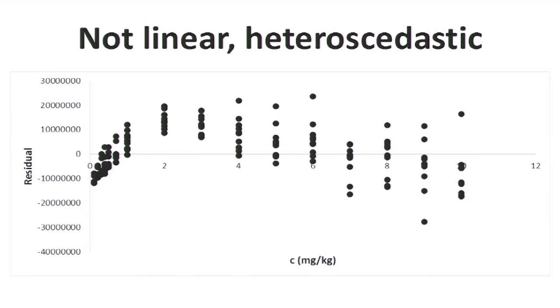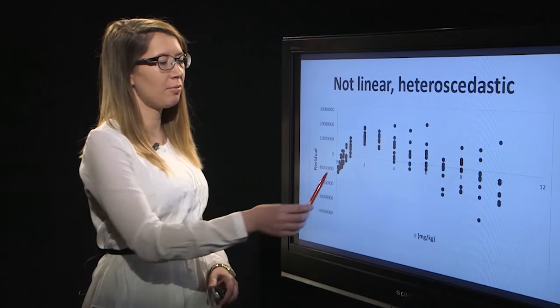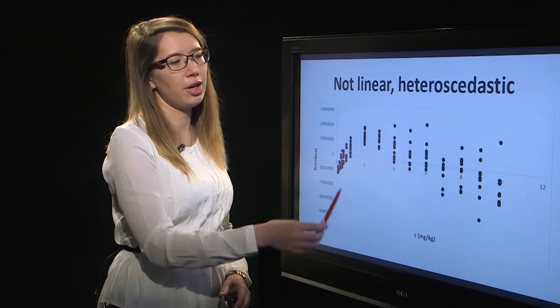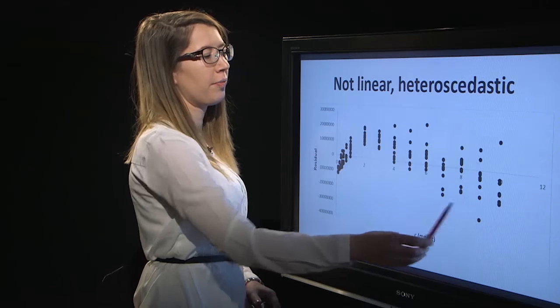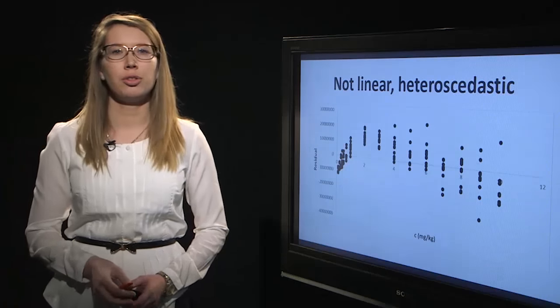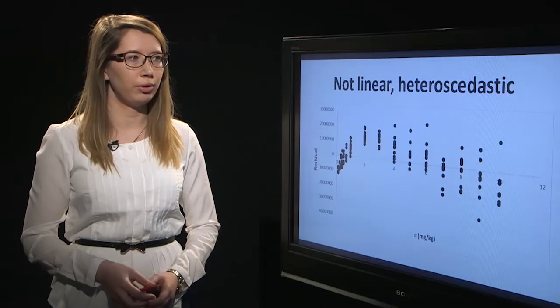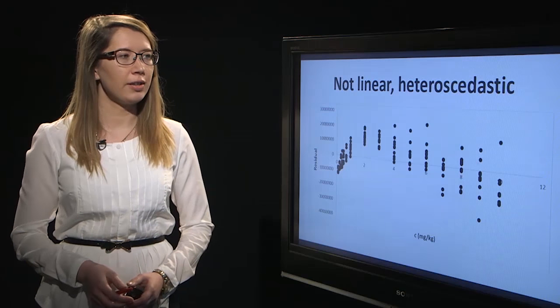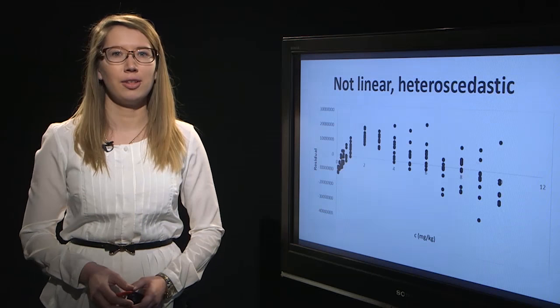When our calibration graph is not linear, we can see a systematic placement of the residuals on this graph. The residuals have the same sign at lower concentrations and higher concentrations and the opposite sign in the middle part. Therefore, we shouldn't use a linear regression model. Also, we can see the heteroscedasticity on this graph.